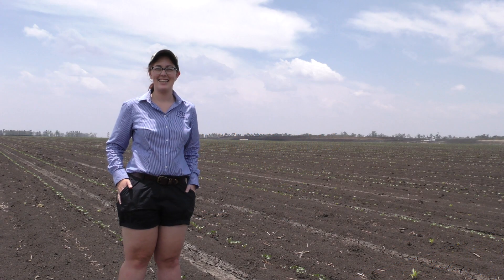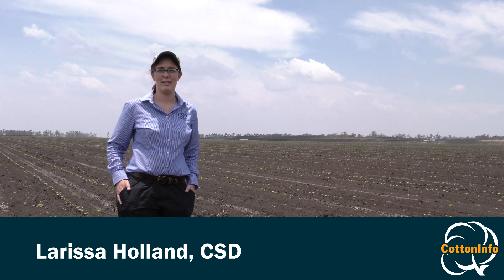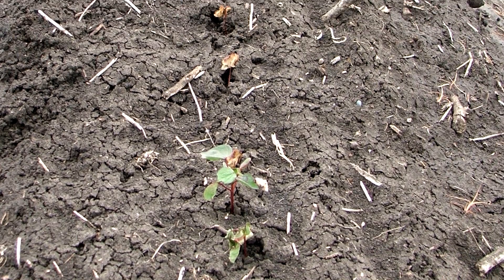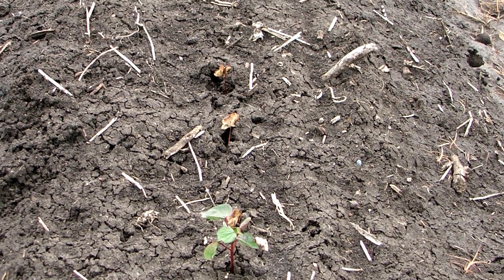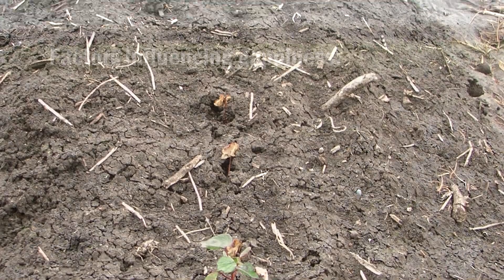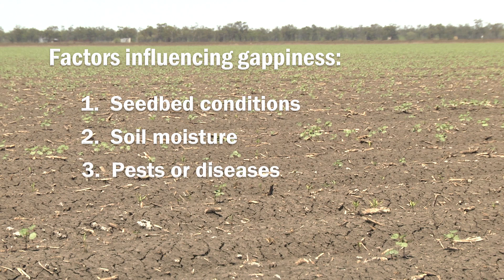One of the key things you need to get a good yield at the end of the season is to start off with a good establishment. The main thing we're interested in is consistency of the plant stand and avoiding big gaps, caused by poor seedbed conditions, poor subbing up — especially under dry conditions — and cotton pest insects and diseases.